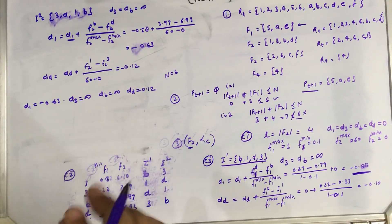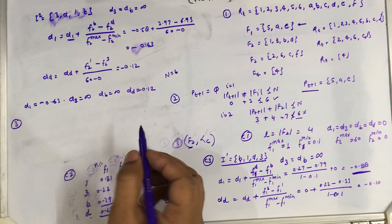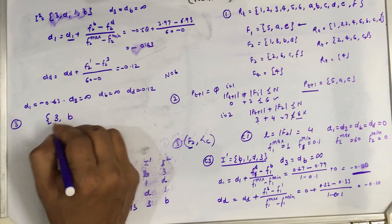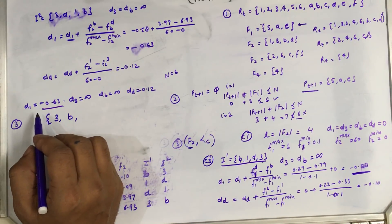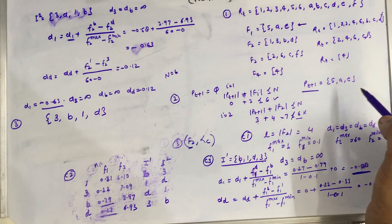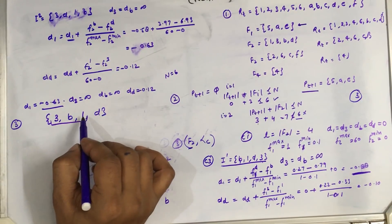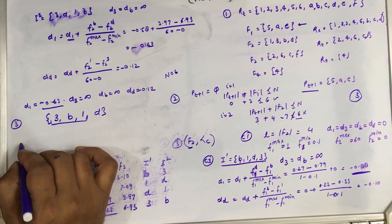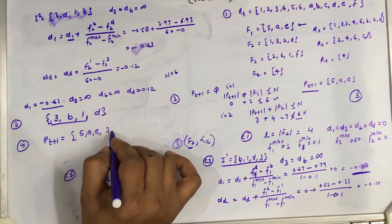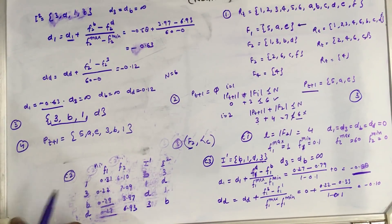Based on these crowding distance values, step 3 is to sort the solutions in descending order of crowding distance. The first solutions would be 3 and B (both infinity — either can be picked first), then D, then 1. In P(t+1), only three spaces are left, so we take the top three solutions. The final P(t+1) set — step 4, the last step — would be: 5, A, E (from the first front), then 3, B, 1 (the least crowded, most diverse solutions from F2).